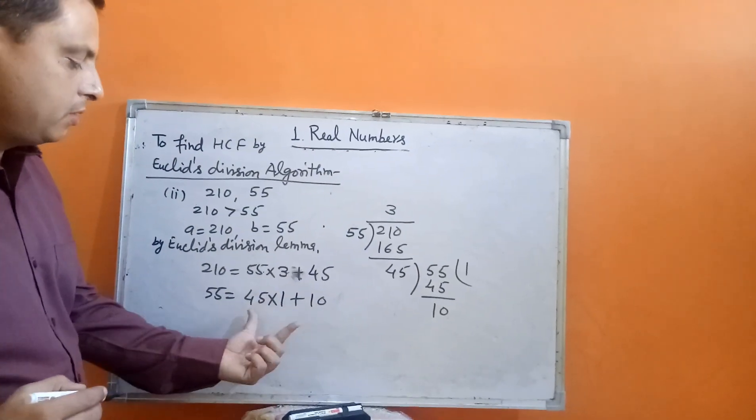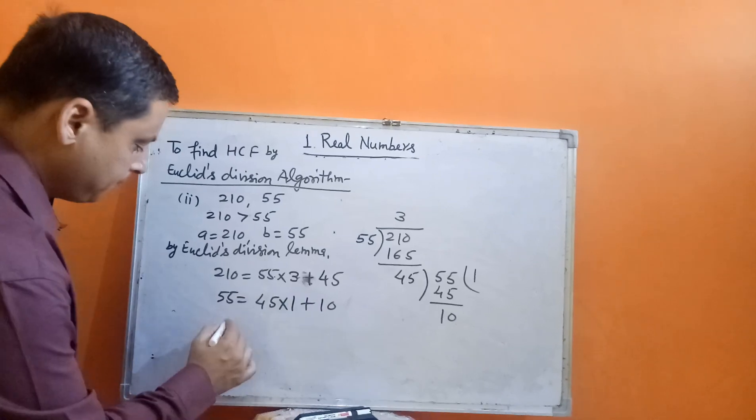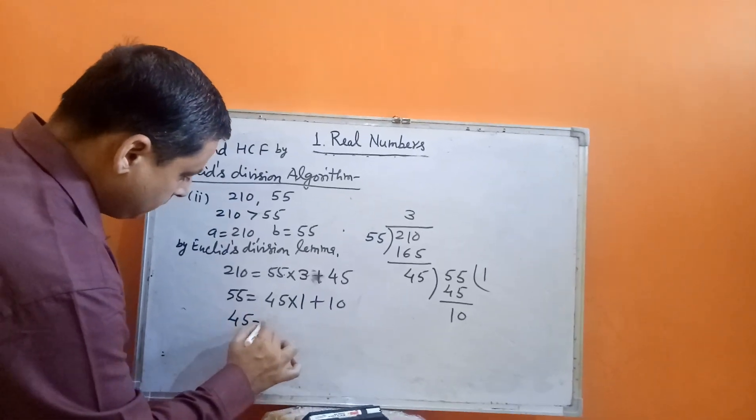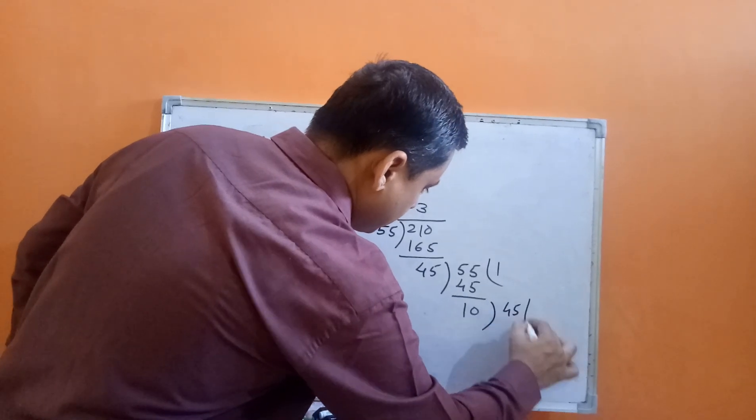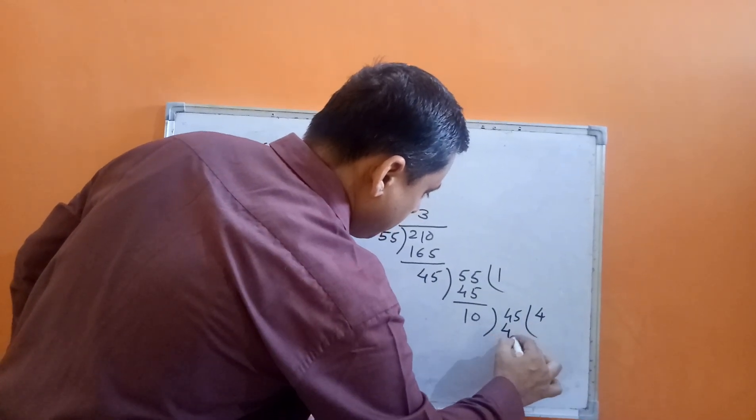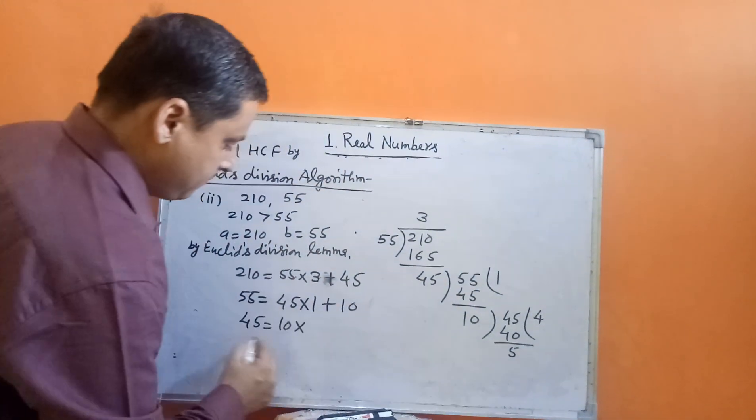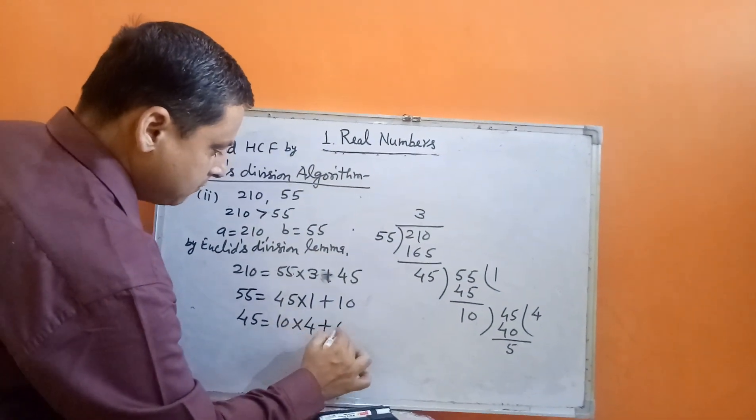This remainder is not 0, so we will apply the same process on 45 and 10. We will divide 45 by 10, 4 times gives 40. Remainder is 5. That will be 4 plus 5.